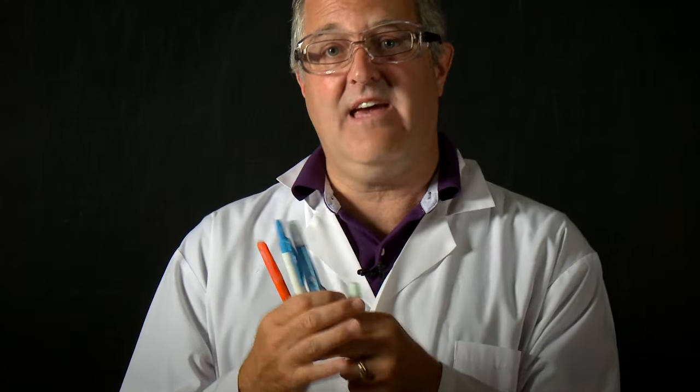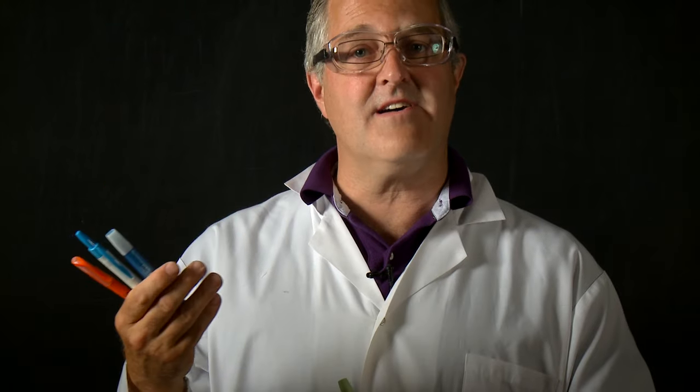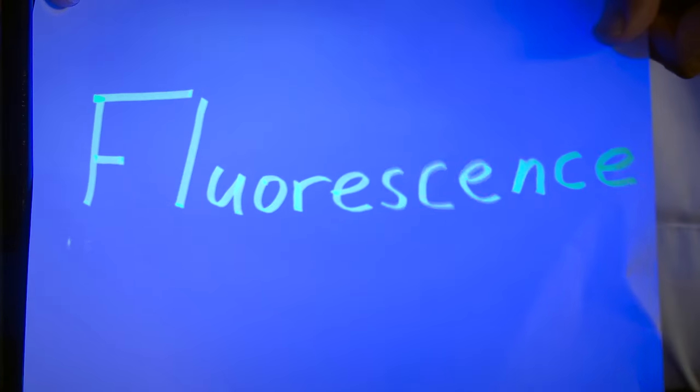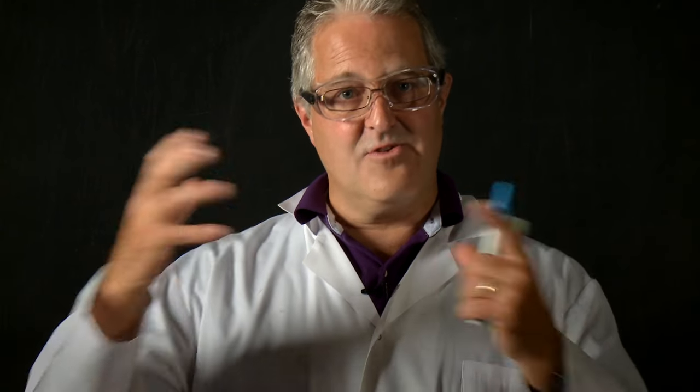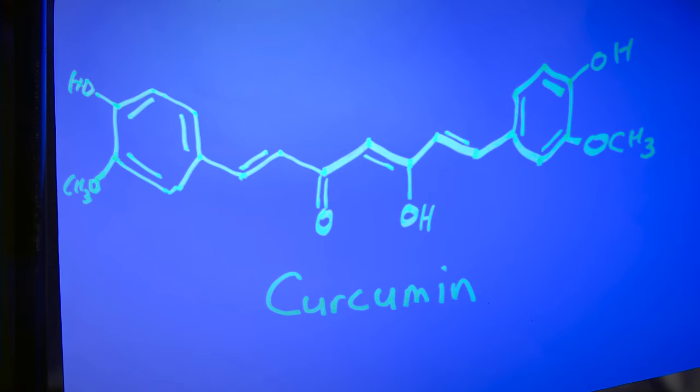Fluorescent highlighters simply have ink that contains fluorescent molecules as well as color molecules, and so when the room light hits the places where you've highlighted it, it glows quite bright, and so it really highlights the text on the page.